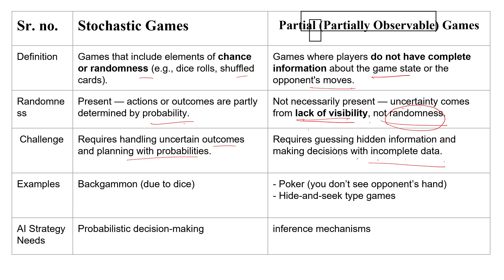Examples: for Stochastic Games — Backgammon, because when you throw a dice you don't know which number will appear, so randomness is involved; also Coin Flipping. For Partially Observable Games — Poker, the card game where you can see your own cards but not others', and Hide and Seek, where you have limited visibility.